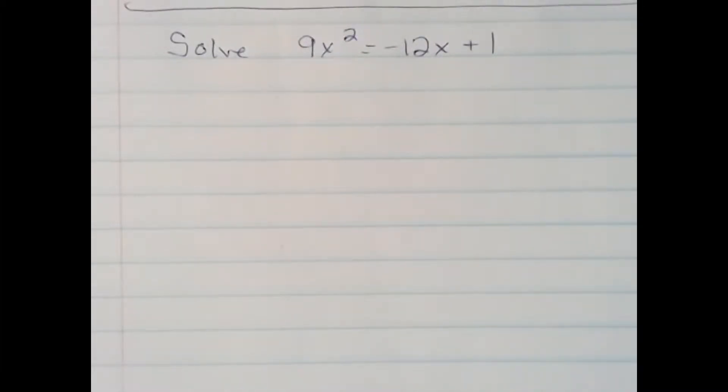So here we have another quadratic. We're going to solve using the quadratic formula. 9x squared equals negative 12x plus 1.